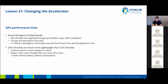GPU threads are also much more lightweight than CPU threads, which means context-switching is very cheap on GPUs. This means you should spawn many more threads than you have GPU cores in the general case, so you can hide the high memory latency on GPUs behind computation.